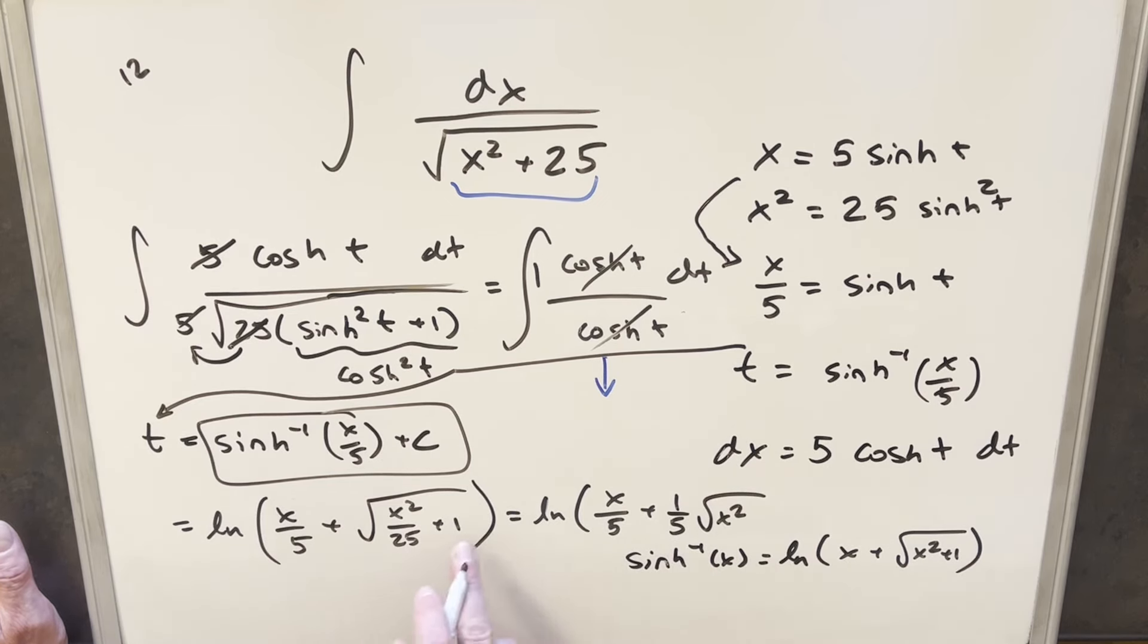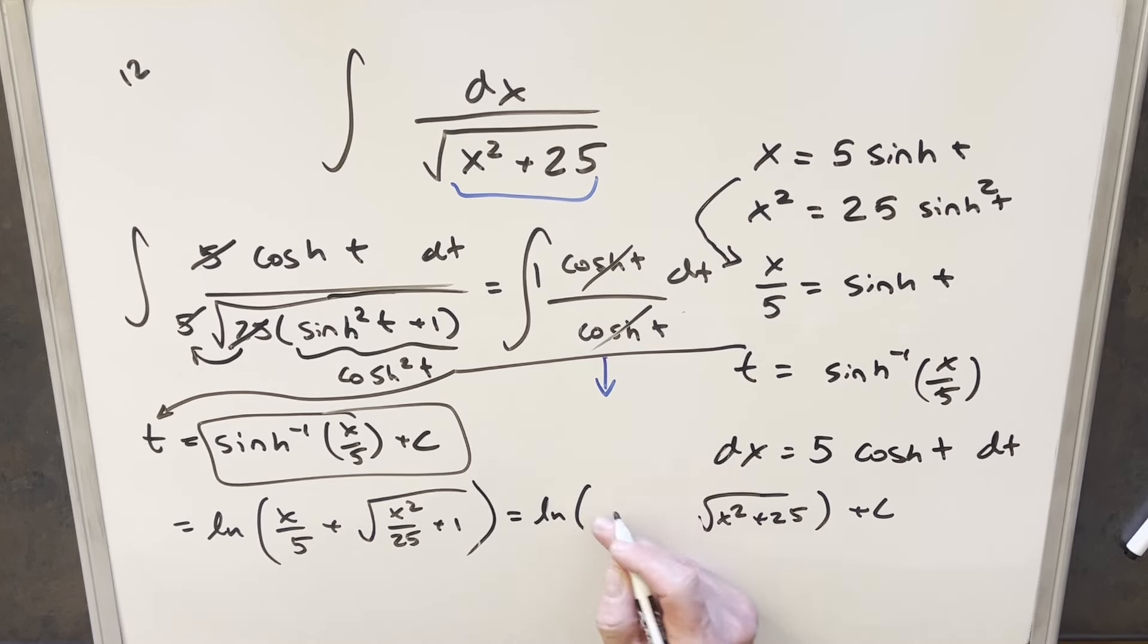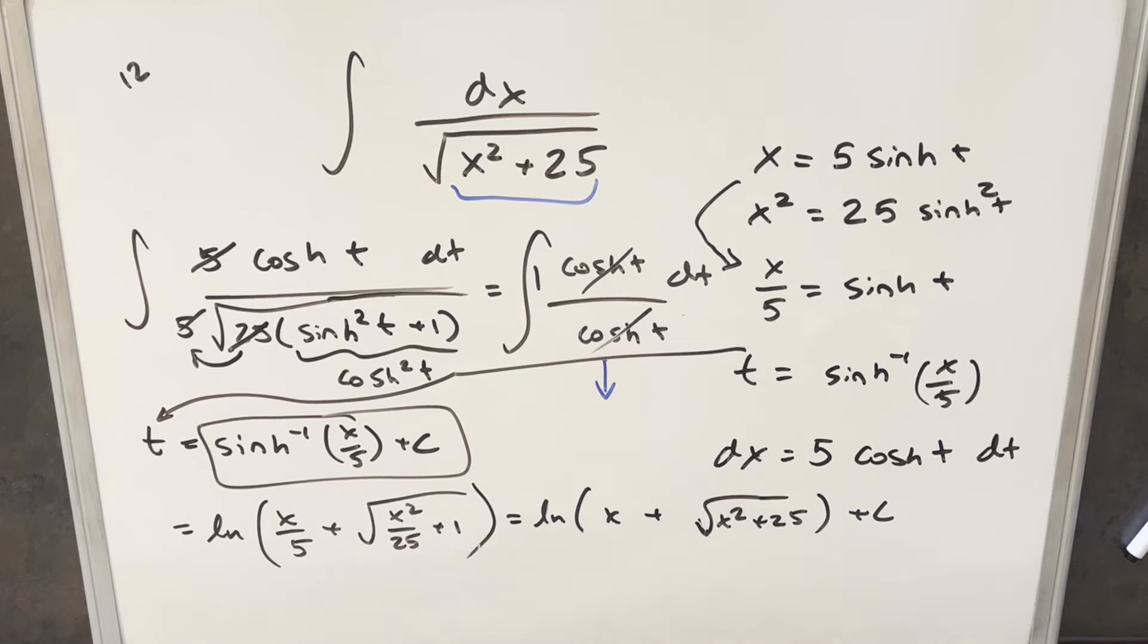But what we did in the previous video is then once we had a common denominator, we put these two together and we use log properties to bring this over here as ln 5. But then that got absorbed into this constant. And so we can just express this solution as natural log x plus square root of x squared plus 25 plus C.